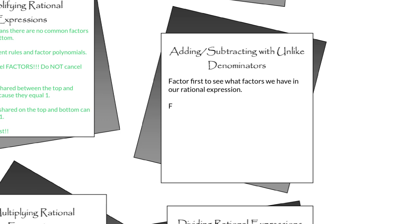After we factor, we need to form a common denominator through multiplication. What that means is take the denominators or pieces of the denominators and make one common denominator. For instance, if you needed to add one-third and one-half, the common denominator for those two would be one-sixth. You multiply the two and the three, the denominators together, to make that common denominator.